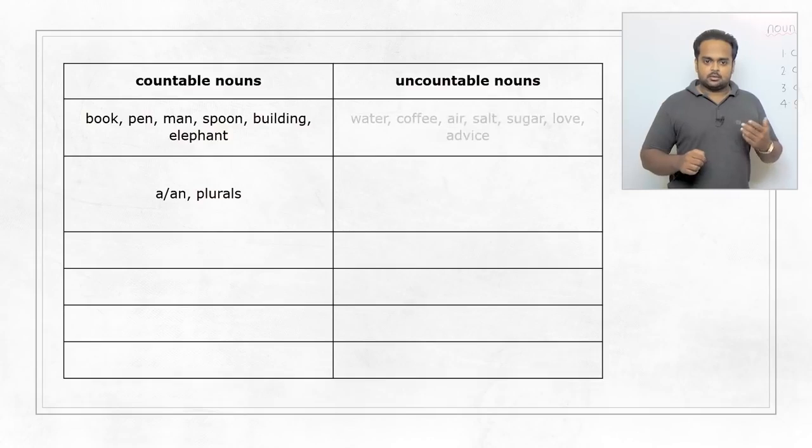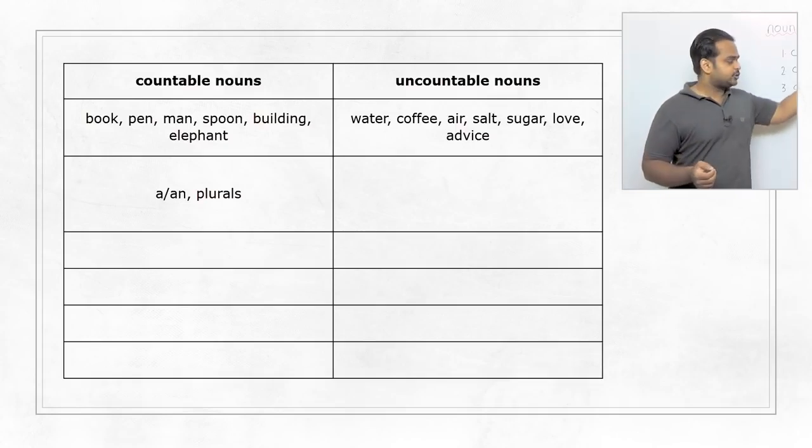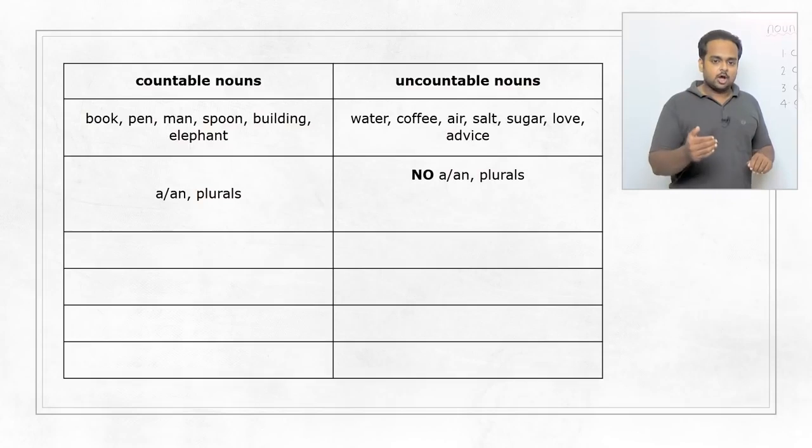But uncountable nouns are nouns like water, coffee, air, salt, sugar, love, advice and so on. Just by seeing them, you should be able to say there's no way to count them because water and coffee are liquids, air is a gas, salt and sugar are so small that if you try to count the individual particles, that would be an extremely difficult task and love and advice are abstract nouns because they're feelings and ideas, so most abstract nouns are uncountable. So with uncountable nouns, we cannot use plurals and we cannot use a and an, that is very important.